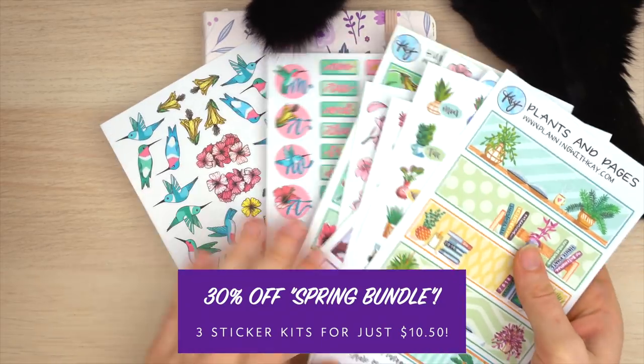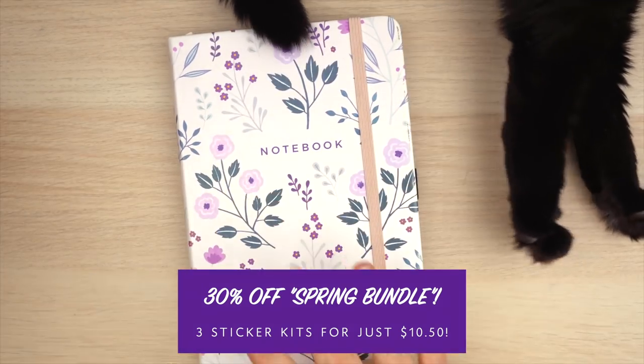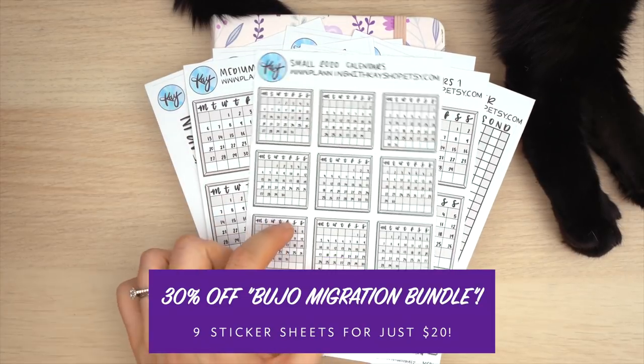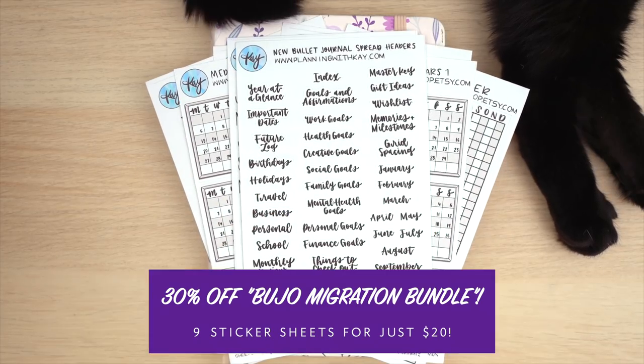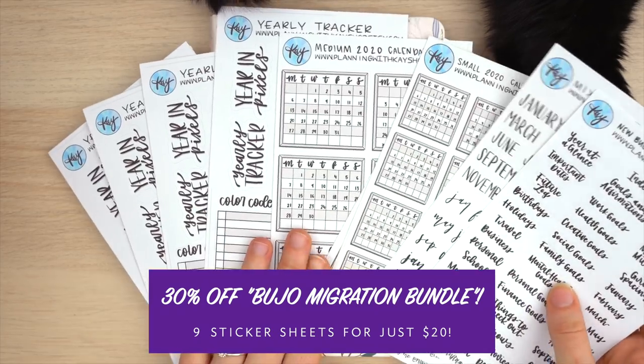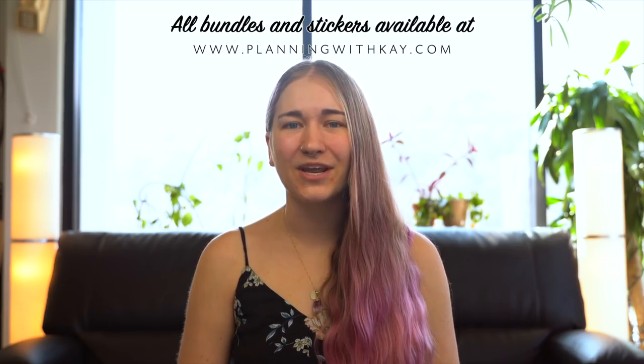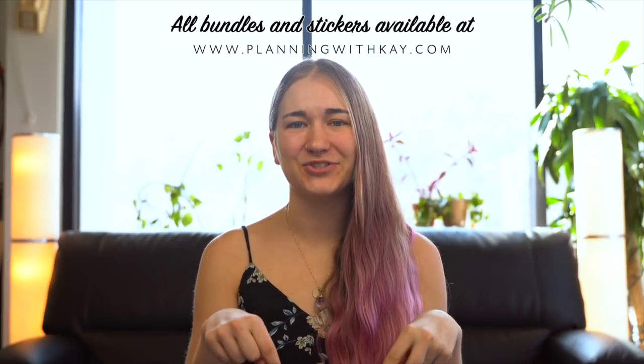I'm going to be offering all three of these kits in a very special 30% discounted bundle in my shop. This is one of the biggest sales that I'll be doing all year for these stickers. Alongside that, I'm also going to be having a functional bullet journal migration bundle that's also going to be 30% off and include all of the functional stickers that I'm using throughout this setup. Be sure to check out those bundles at planningwithk.com.